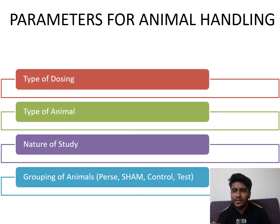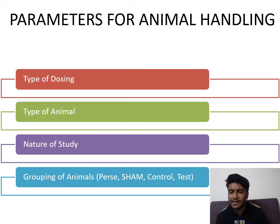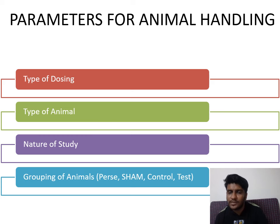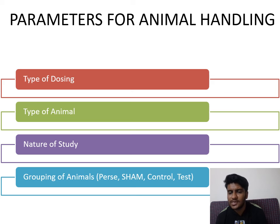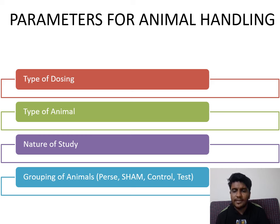Parameters include the type of dosing — whether IV, oral, SC, intramuscular, or whatever — the type of animal, whether small or large, rat or mice, the age of the animal, the gender — male or female. If female and on an estrus cycle, different physiological parameters will be recorded.